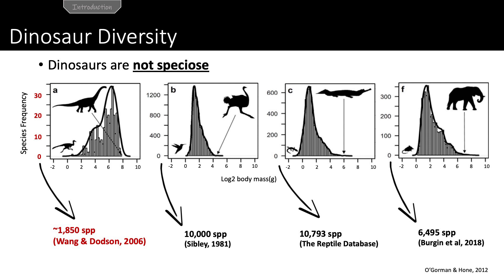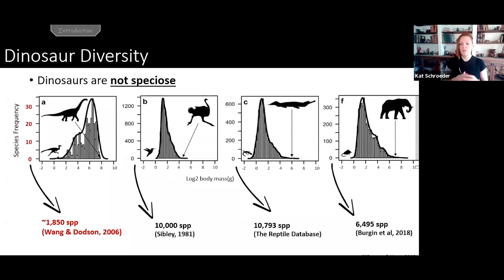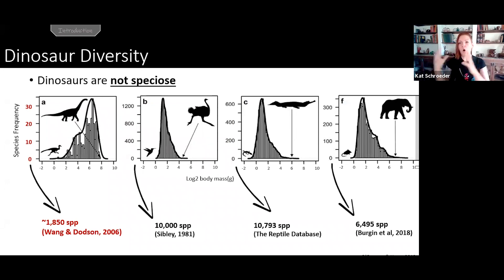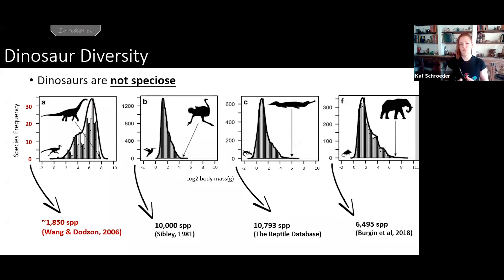The other thing we know about global dinosaur diversity is that it's weirdly low. Modern vertebrates — mammals, reptiles, birds — all tend to be in the thousands to tens of thousands of species. But based on what we know about the fossil record, non-avian dinosaurs are under 2,000 species, despite being the dominant organism on the planet for 150 million years. Even comparing all fossil dinosaurs to all fossil and living mammals, dinosaurs are very depauperate. So knowing what we know about low dinosaur species diversity and their kind of weird left-skew, we start to ask: why is dinosaur diversity so low, and why do they have that backwards body size distribution?